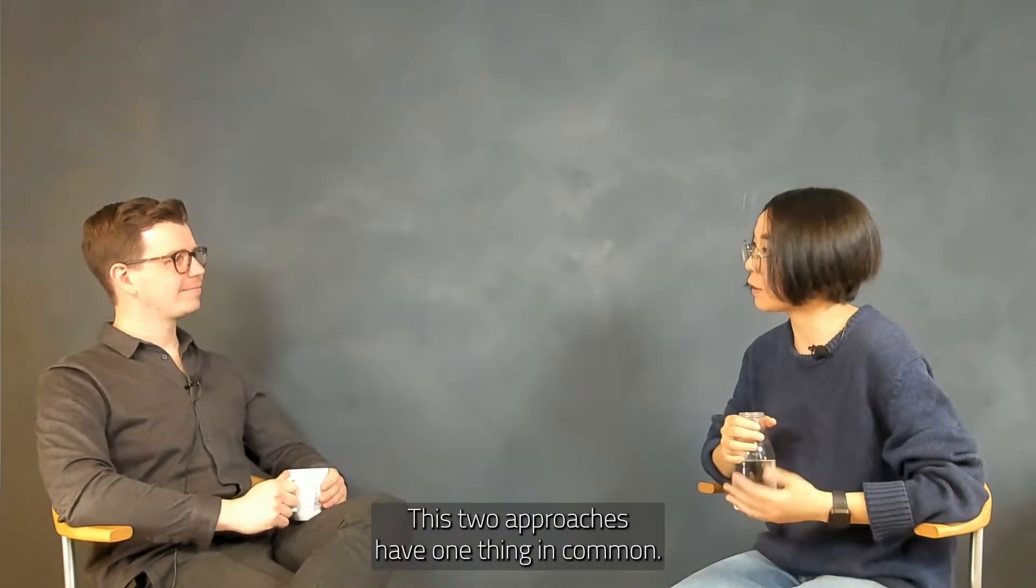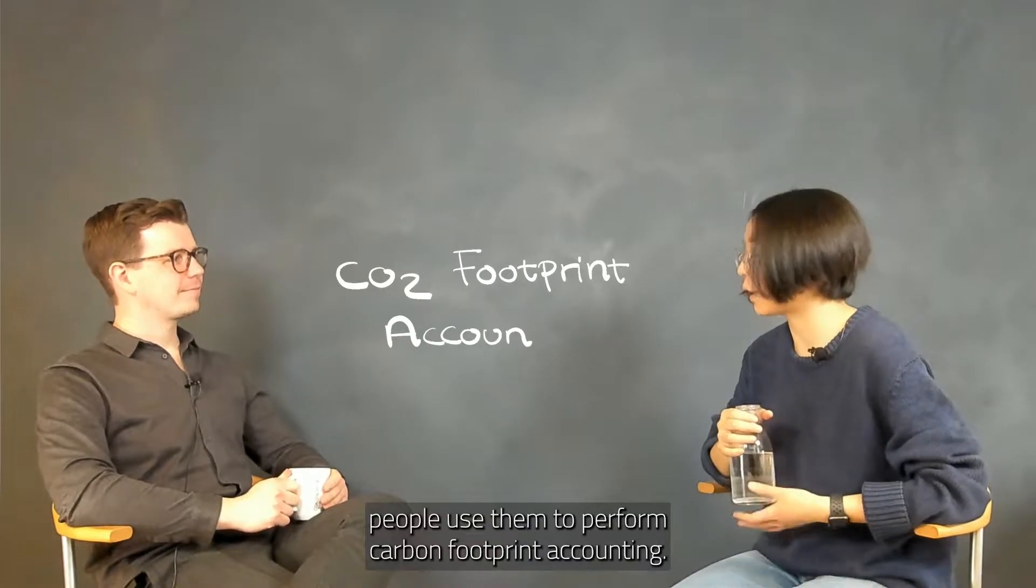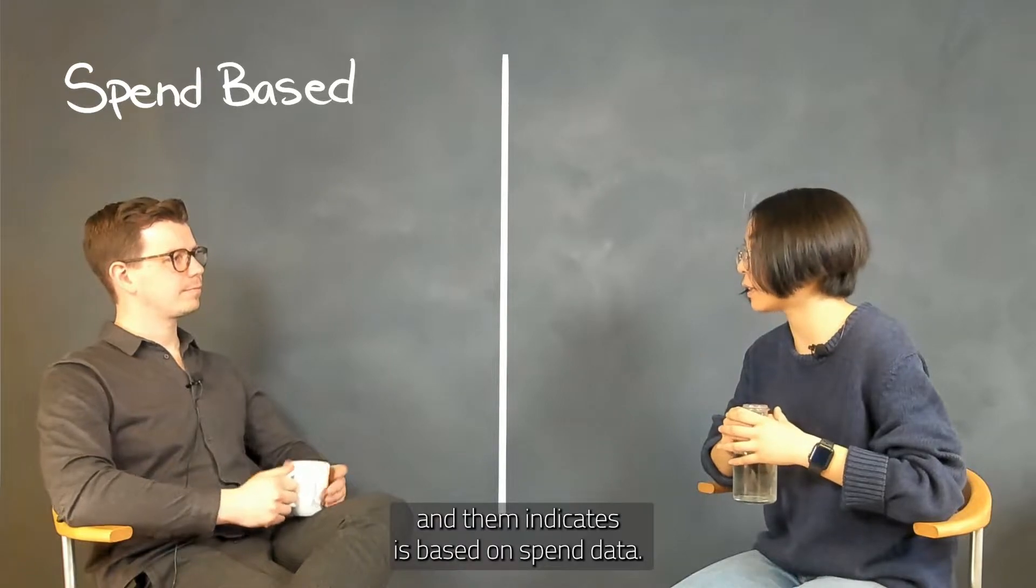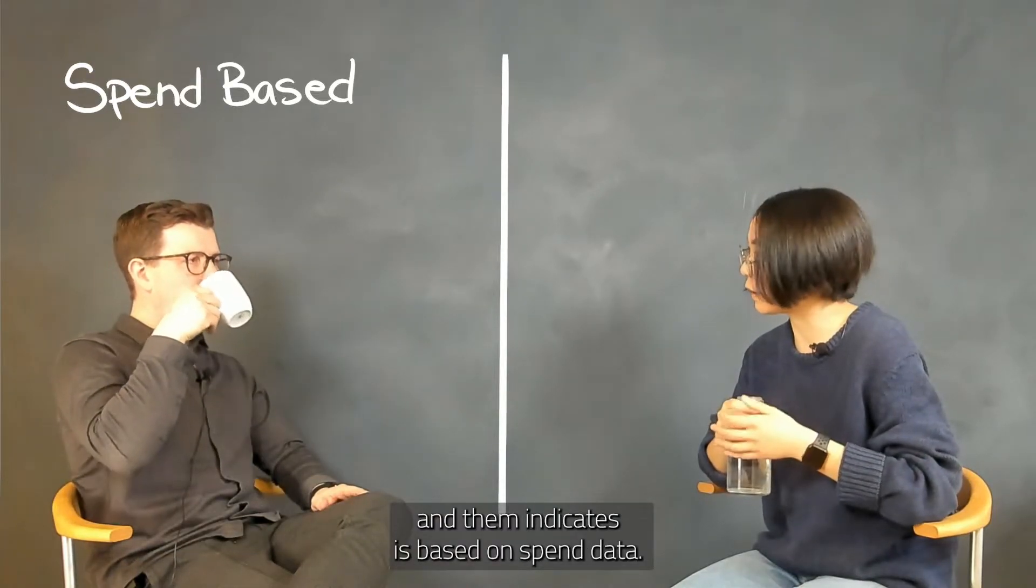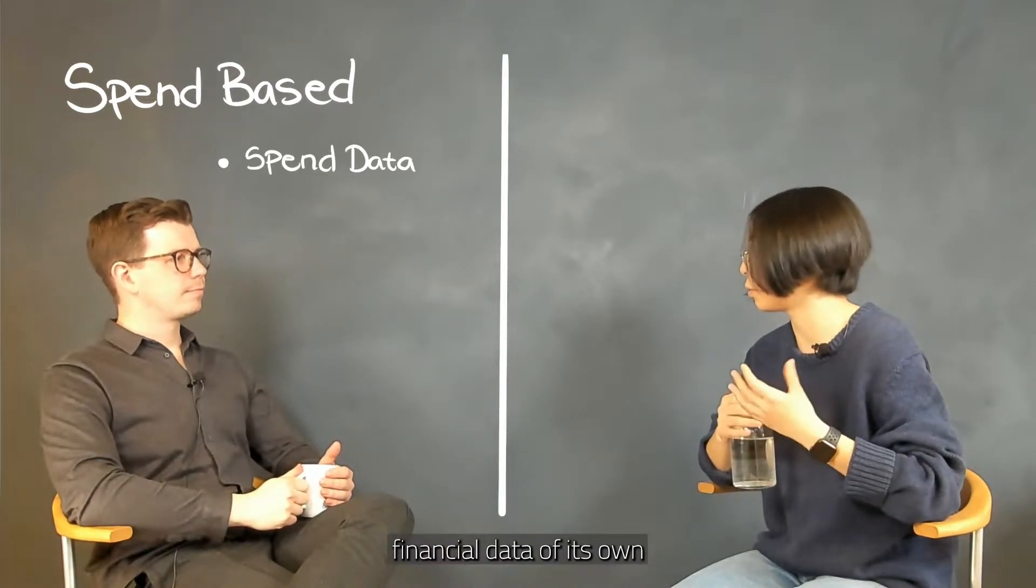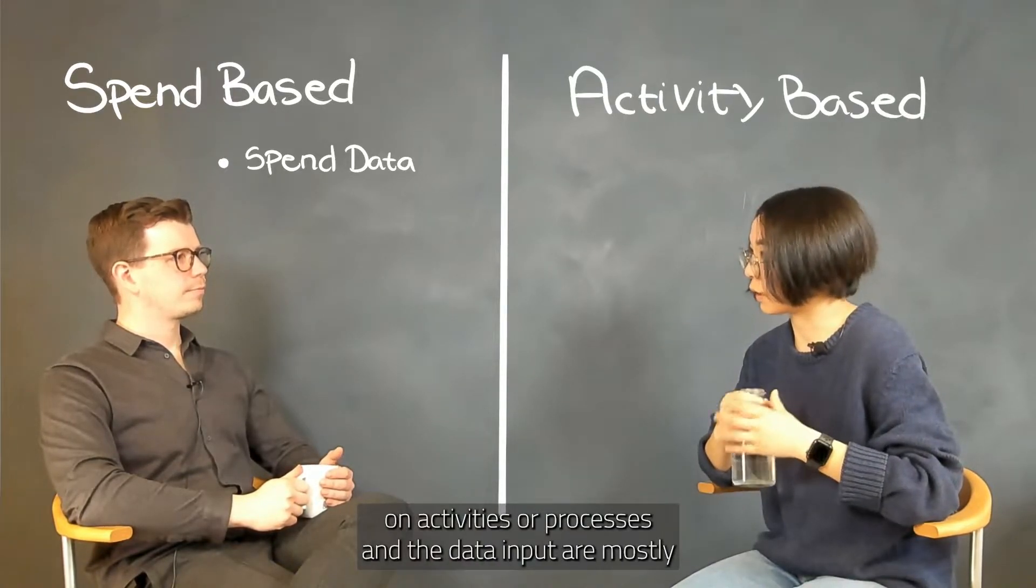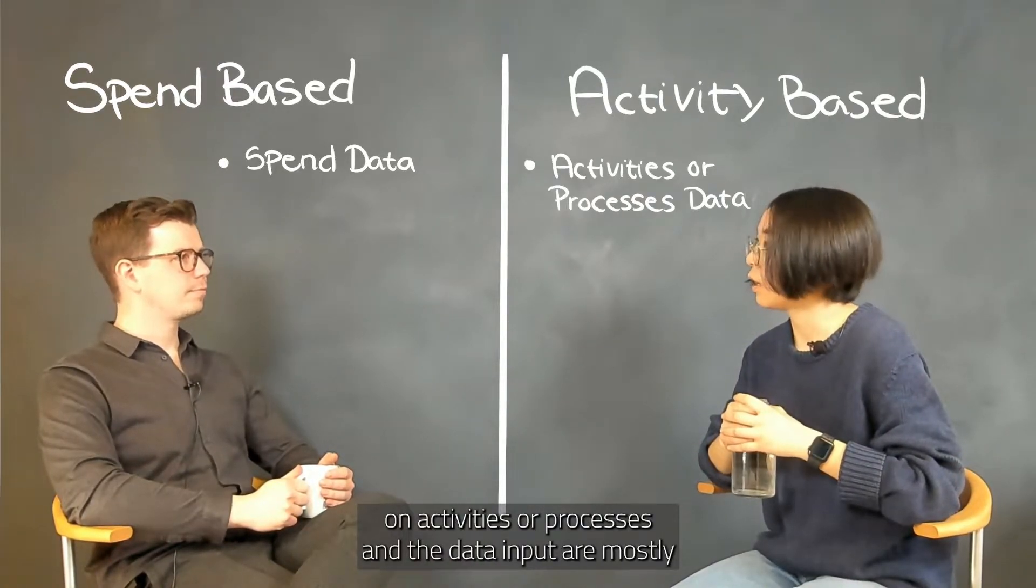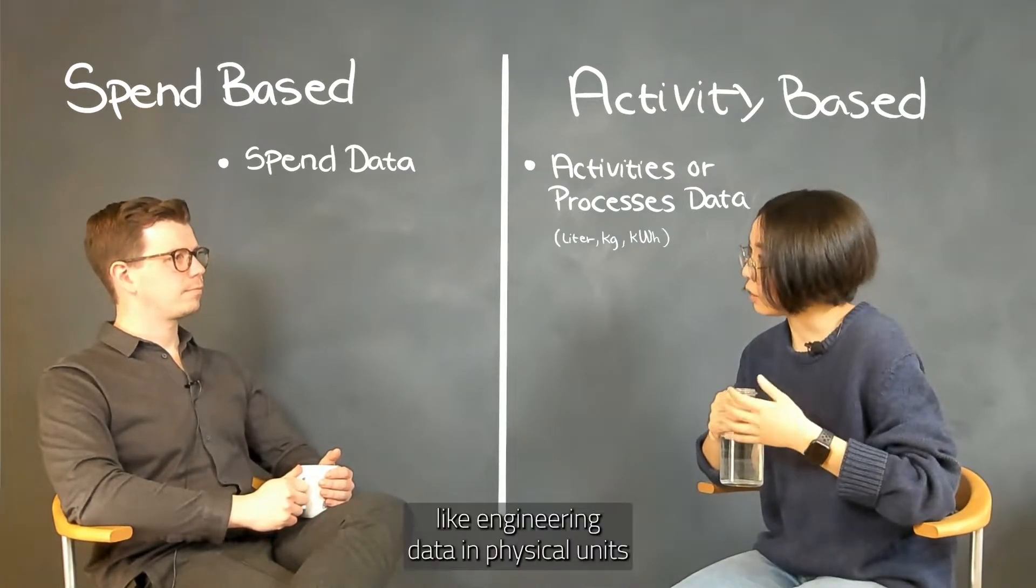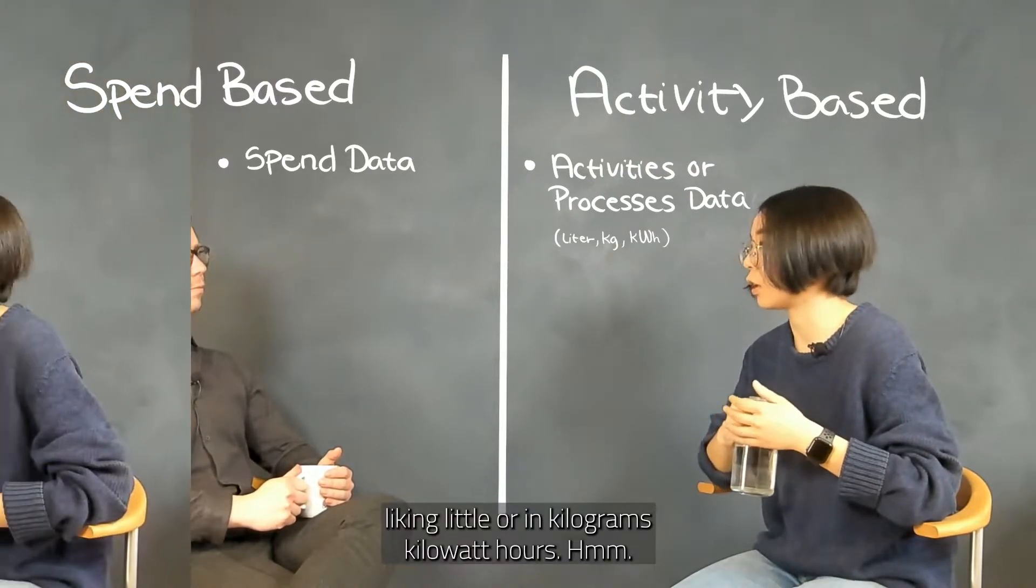Yeah, these two approaches have one thing in common, that is, people use them to perform carbon footprint accounting. And the first one, spend-based approach, as the name indicates, is based on spend data. So a company or reporting person can use financial data of its own as input data, while the other one is based on activities or processes and the data input are mostly like engineering data in physical units like in liters or in kilograms, in kilowatt hours.